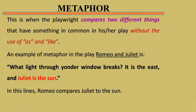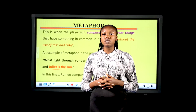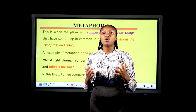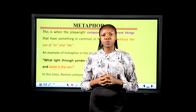The next figure of speech is metaphor. Metaphor is a comparison between two different things that have something in common, without the use of 'as' or 'like.' In this example, Romeo compares Juliet to the sun without the use of 'as' or 'like.'